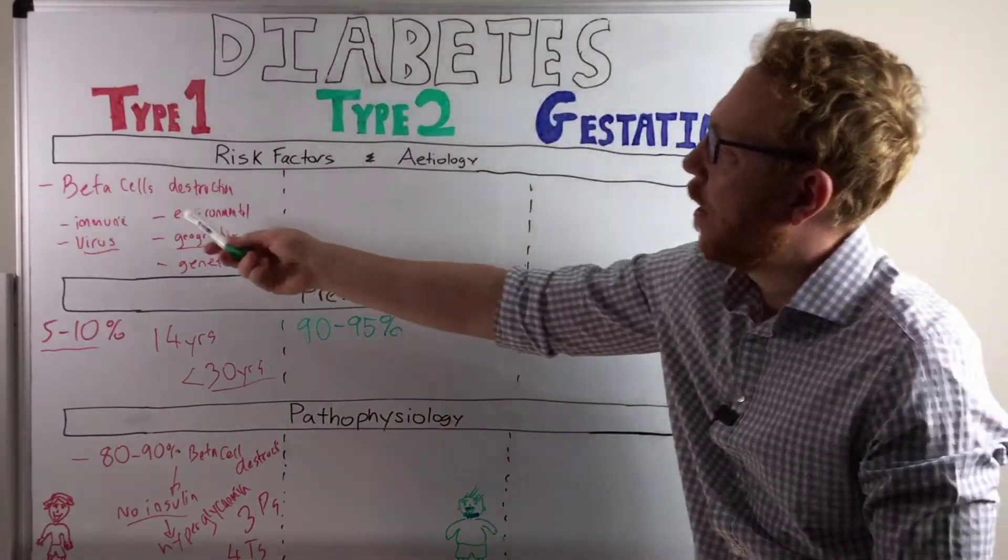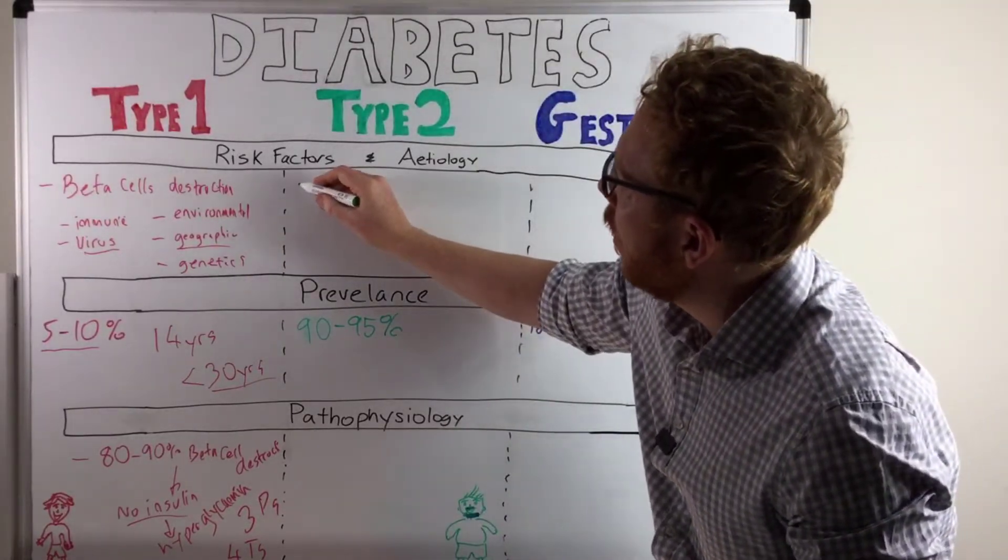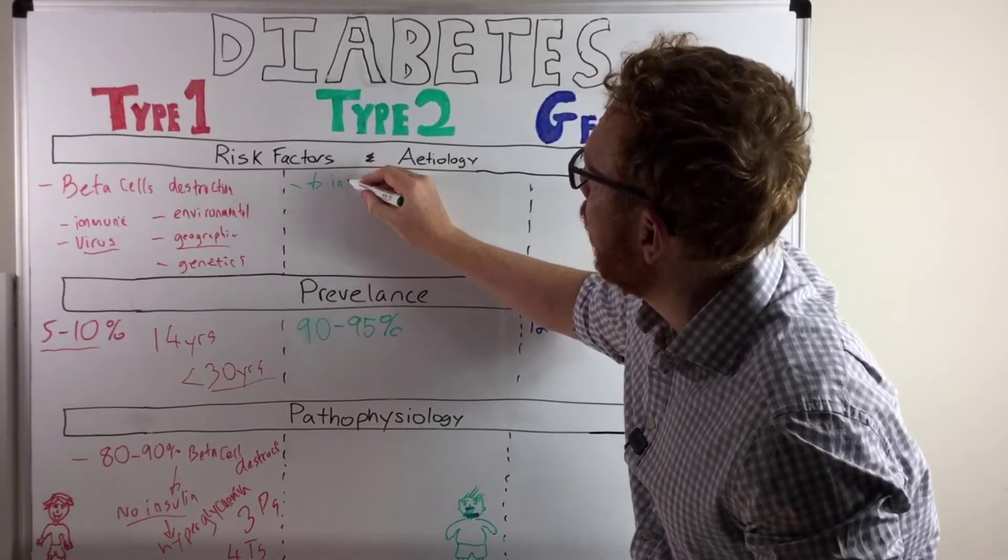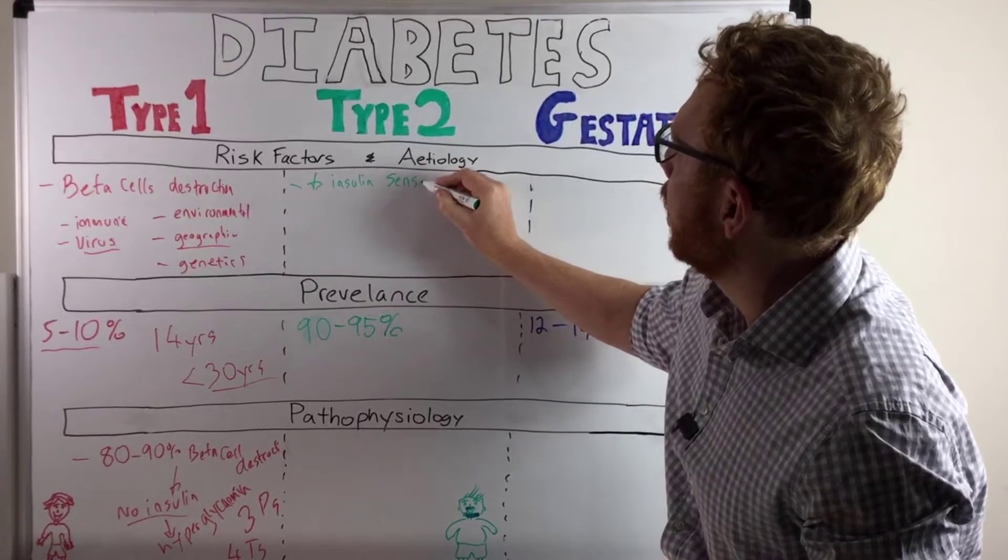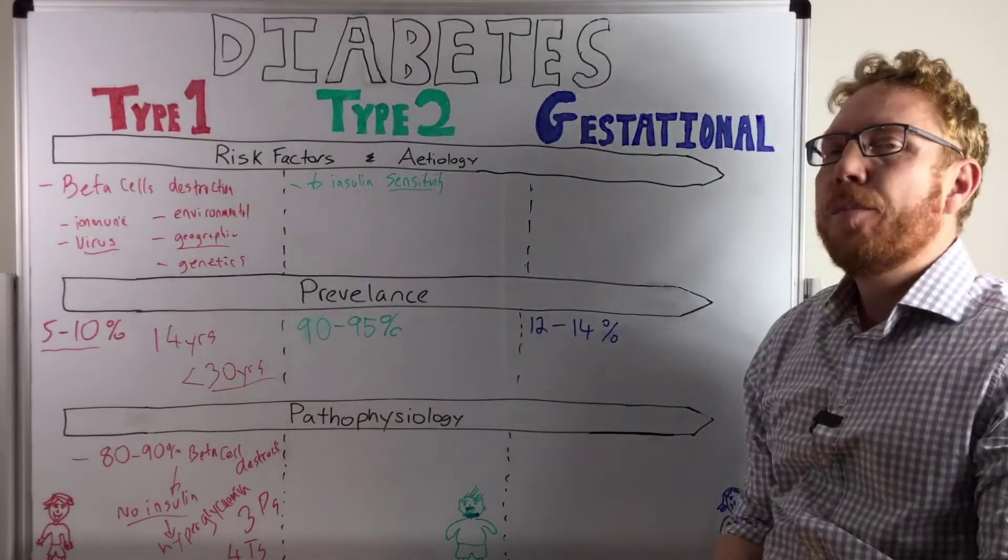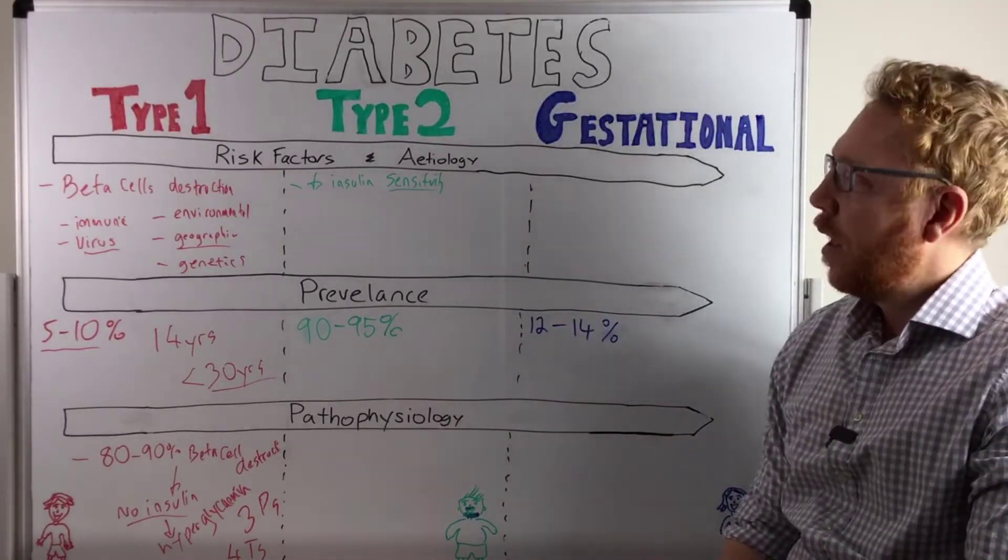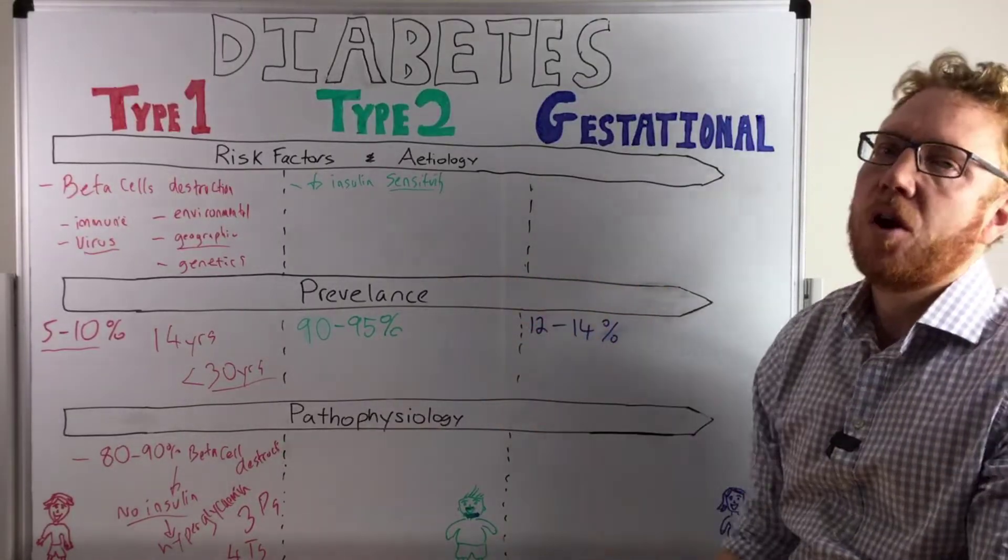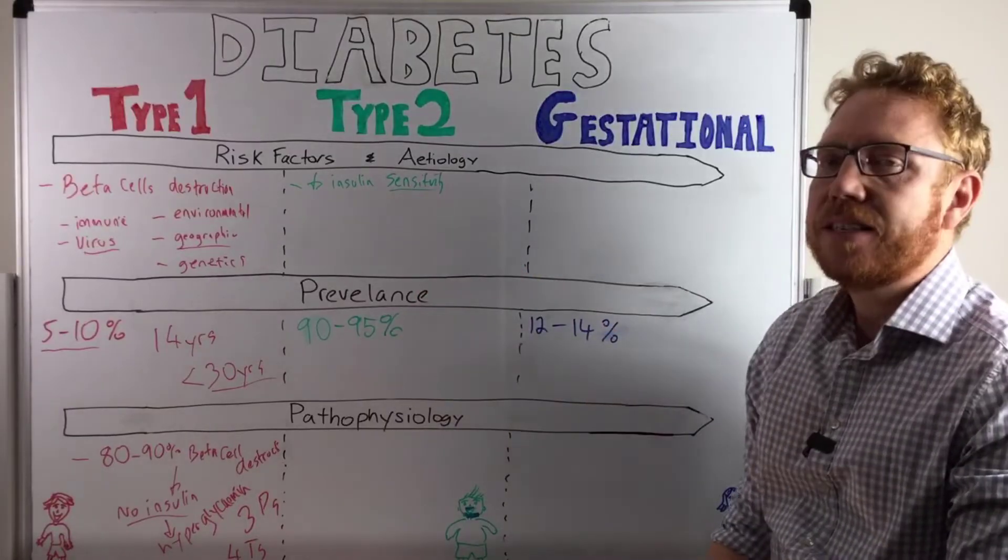Let's move to type 2. Type 2, unlike type 1, which is beta cell destruction, seems to be more of an etiology to do with a decrease in insulin sensitivity. Which means that the body's tissues become less sensitive to insulin release. And what insulin is used for is to allow, to open the door for glucose to go into the cell to make energy.